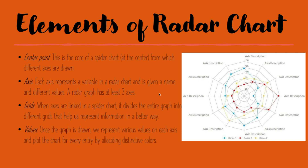The last element is values. Once the graph is drawn we represent various values on each axis and plot the chart for every entry by allocating different colors. In this example we are showing three different series — or products — represented with three different colors, highlighting each of the values in this radar chart. We can also add text labels which represent the value on each dot, which helps us to understand the chart in a better way.